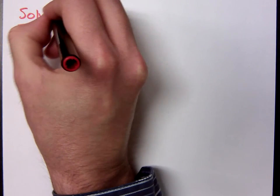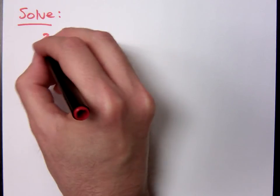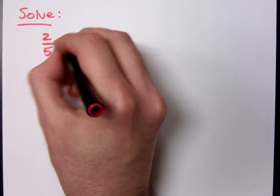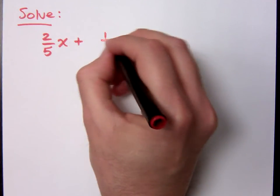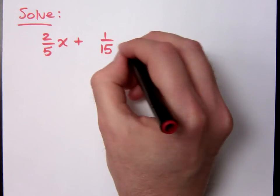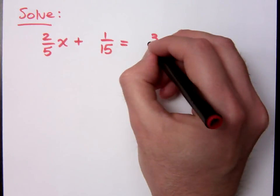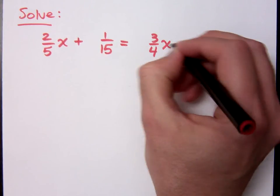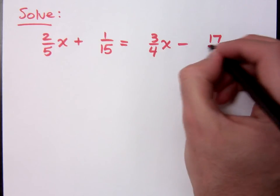All right, let's see what you guys can do with this equation. Solve 2 fifths x plus 1 15th equals 3 fourths x minus 17 over 20.